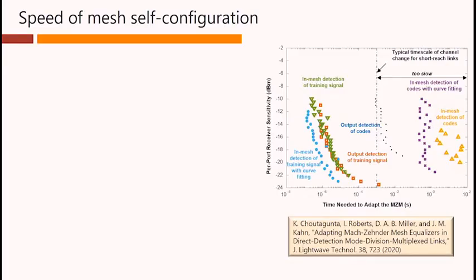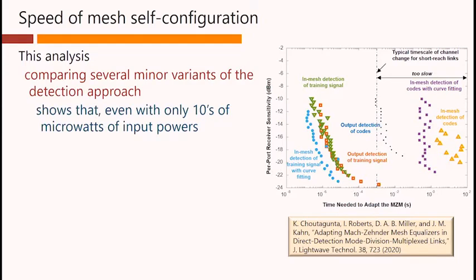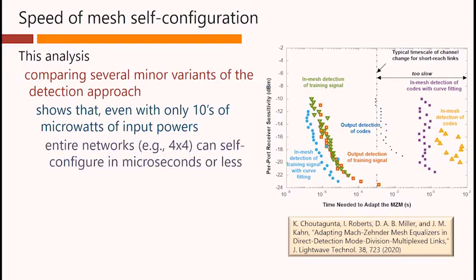An interesting question is how fast these meshes can self-configure. My colleagues Karthik Chiragunta, Ian Roberts and Joe Kahn looked at this, and they performed an analysis of just how fast these meshes could converge based on detecting these kinds of signals. So this analysis shows that even with only tens of microwatts of input powers, entire networks, for example, the 4x4 networks I've used as an example before, can self-configure in microseconds or less.